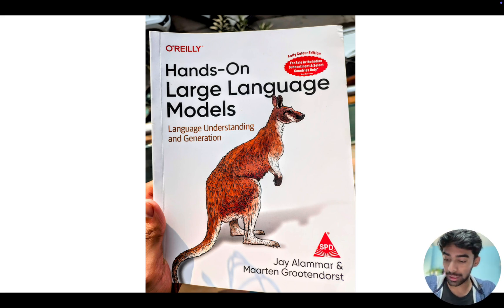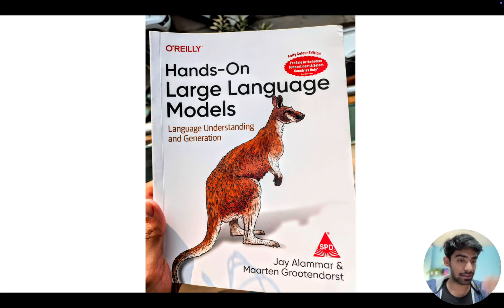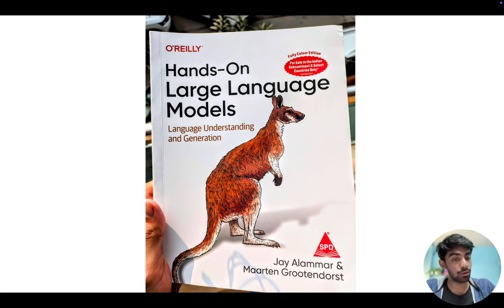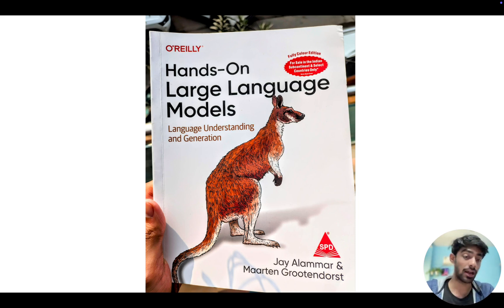If you go through this book, you will start from the very basics — introduction to what is AI and what are large language models. Then you will move to how we reached here: tokens, embeddings, simple techniques like text classification, text clustering, and topic modeling. You'll then move to prompt engineering, RAG, multimodal large language models, and at the very end, fine-tuning models and fine-tuning embedding models.